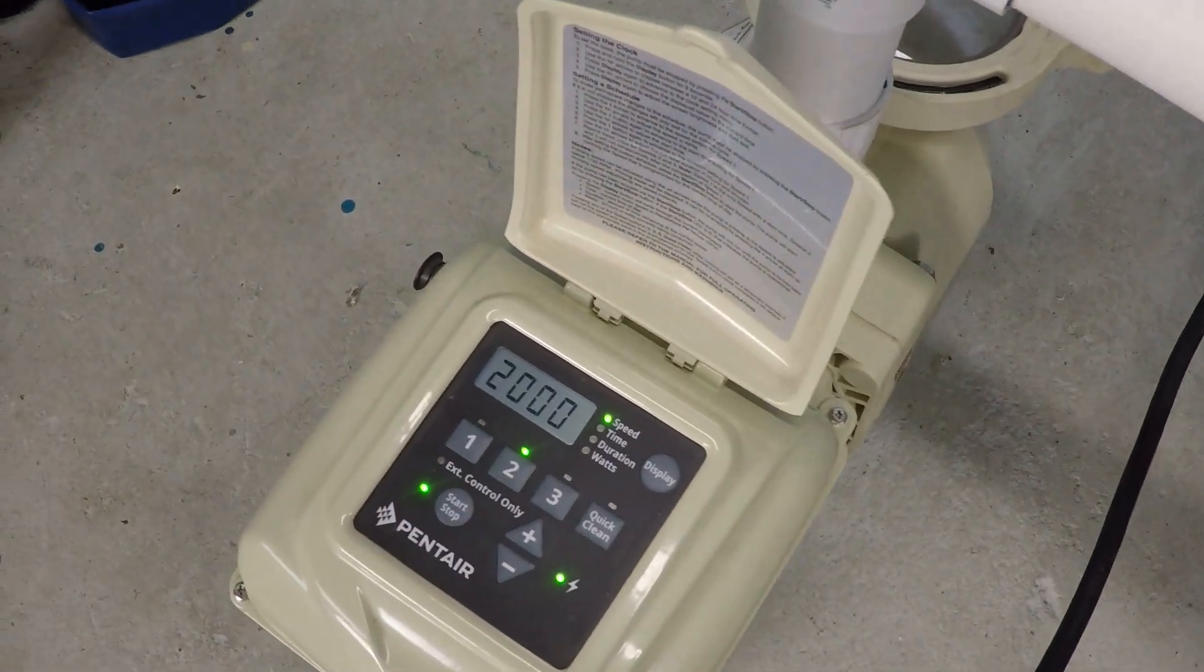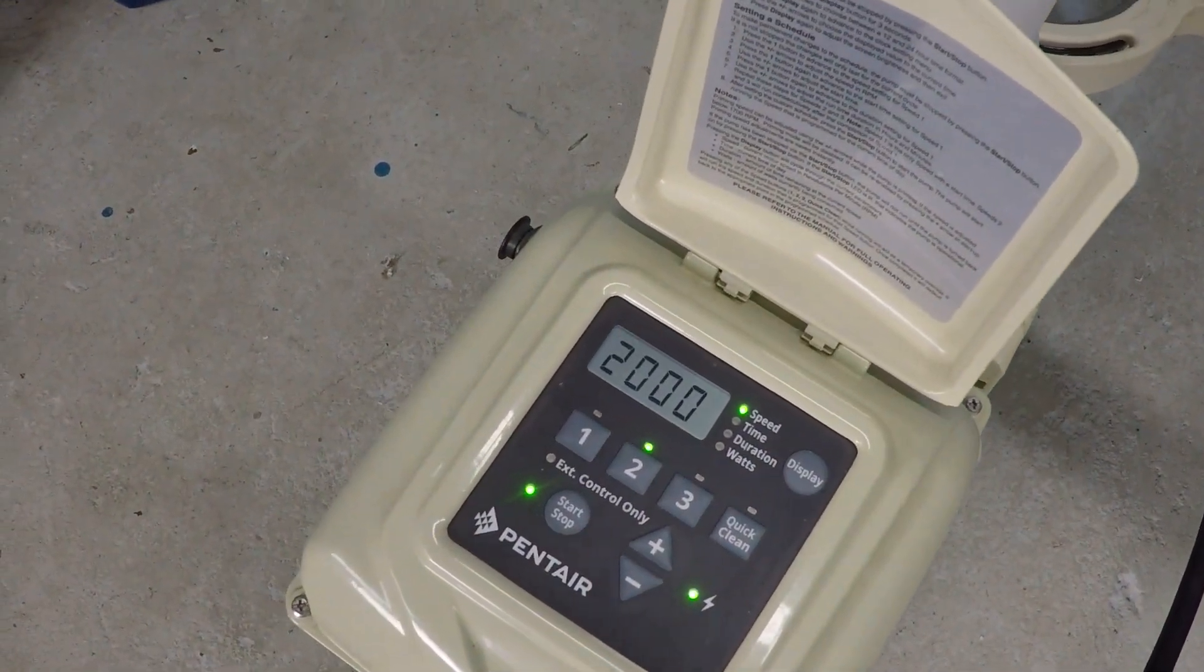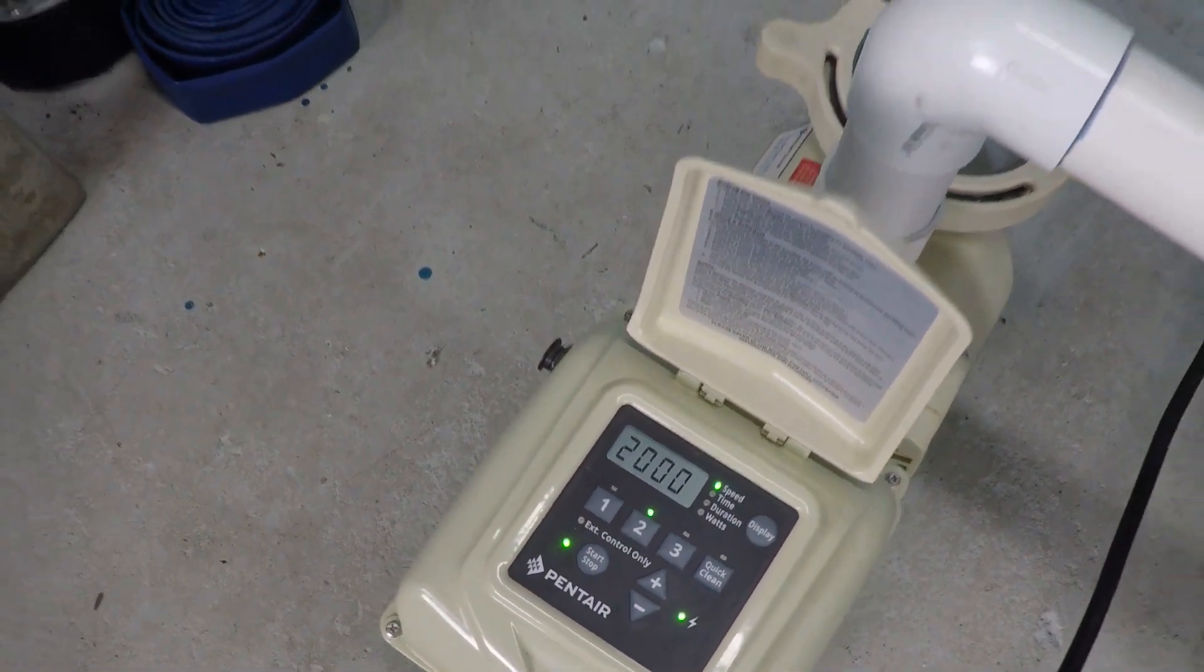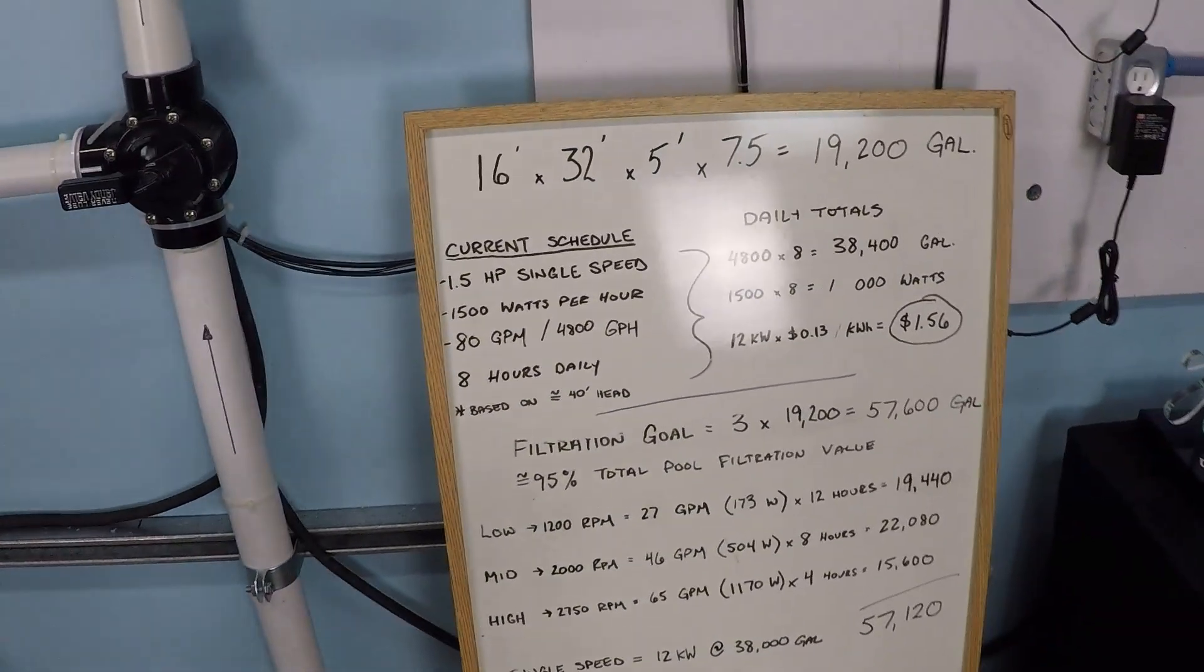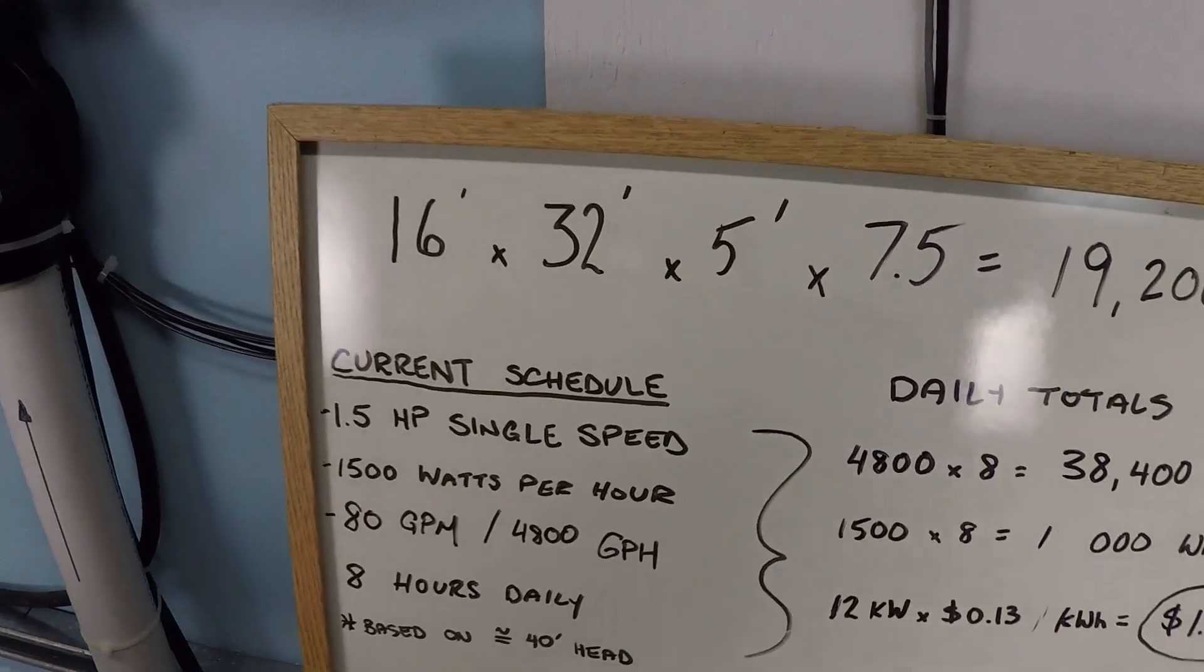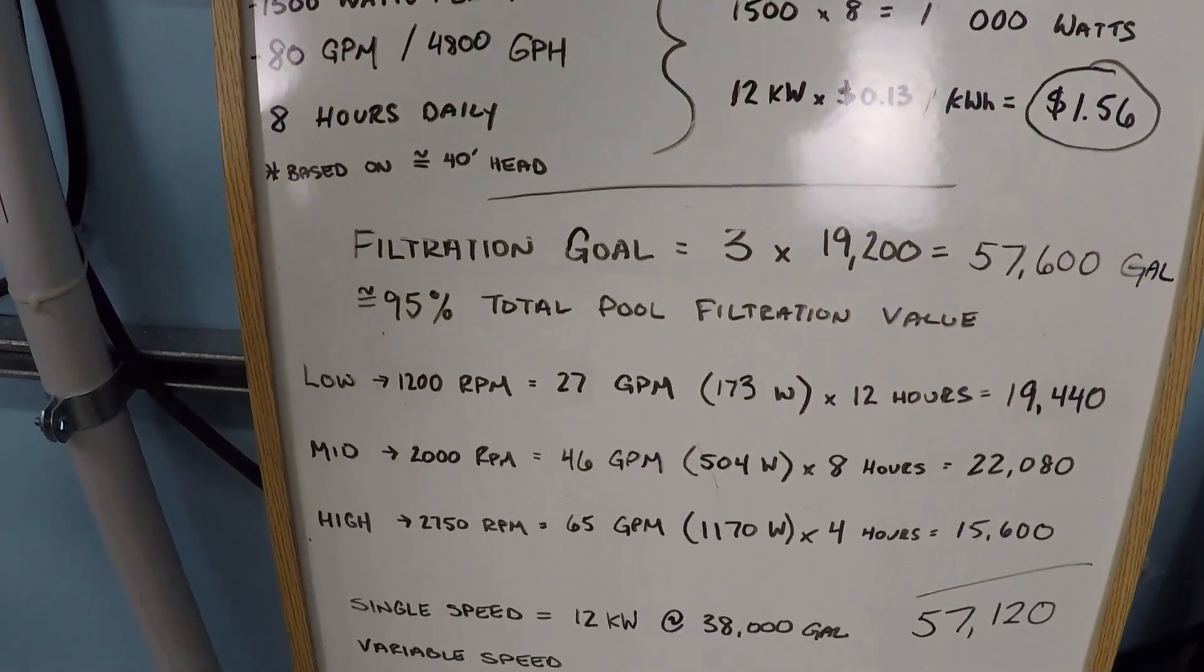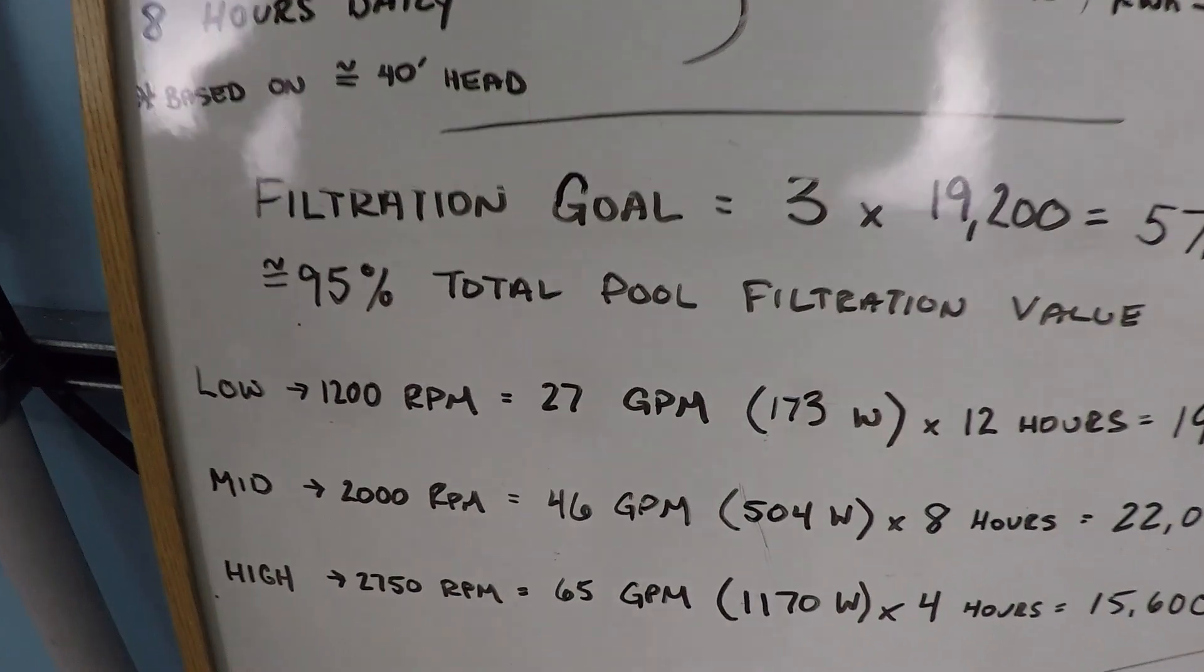You still need periods of time with a swimming pool every day where you have medium RPM, high RPM. Every pool is different. It's built differently, has different peripheral devices on it. So this is a dynamic equation, this is just one example.